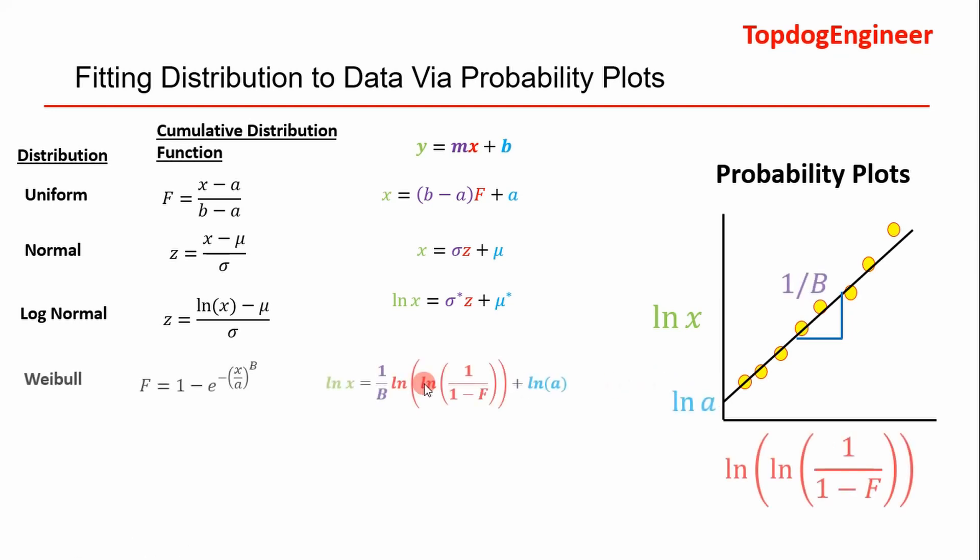The Weibull distribution, the same way of course, it's a little more involved—you gotta apply natural logarithms. But if you do it, you can algebraically rearrange it in this form where 1 over b is going to be your slope and the natural log of a is going to be your intercept. We plot it here and you can get those two parameters from your graphical fit and model it.